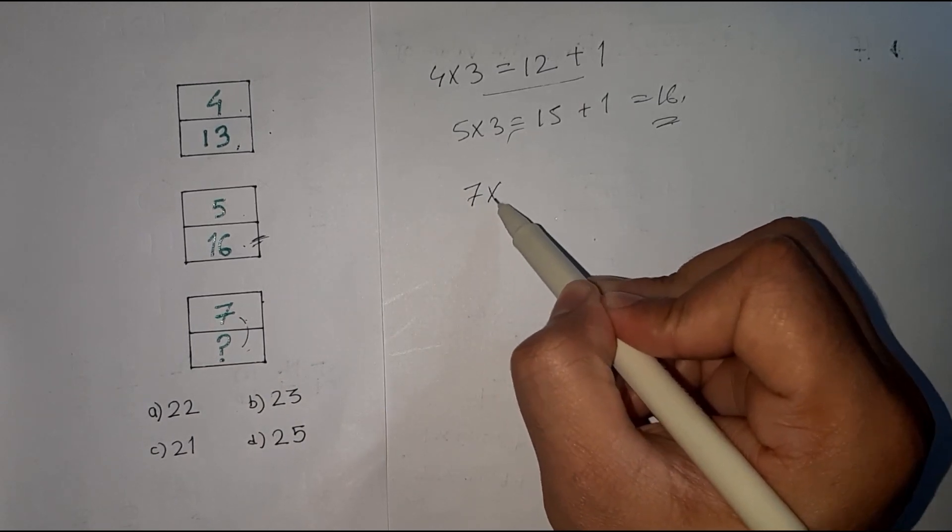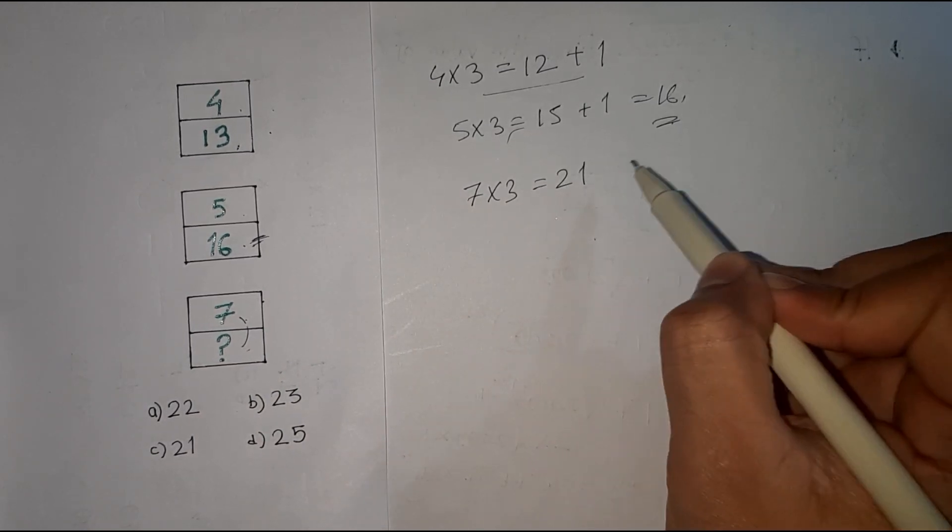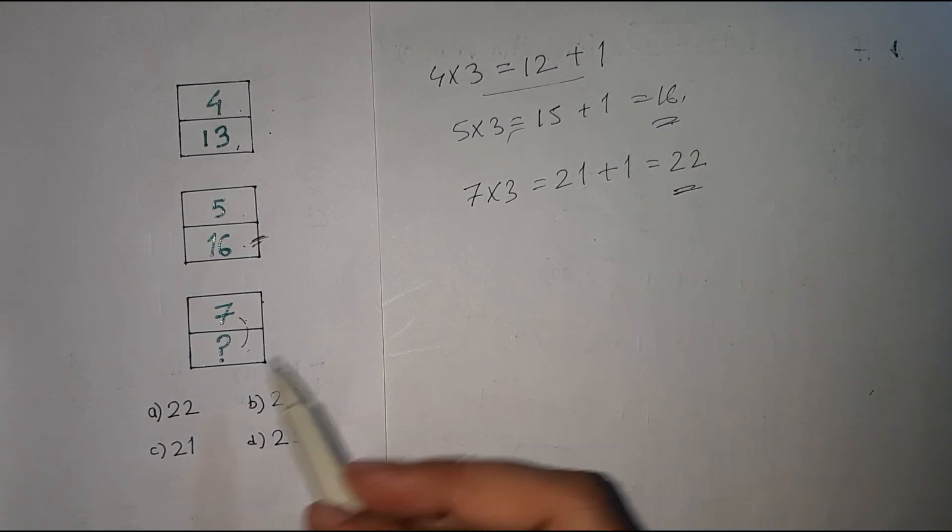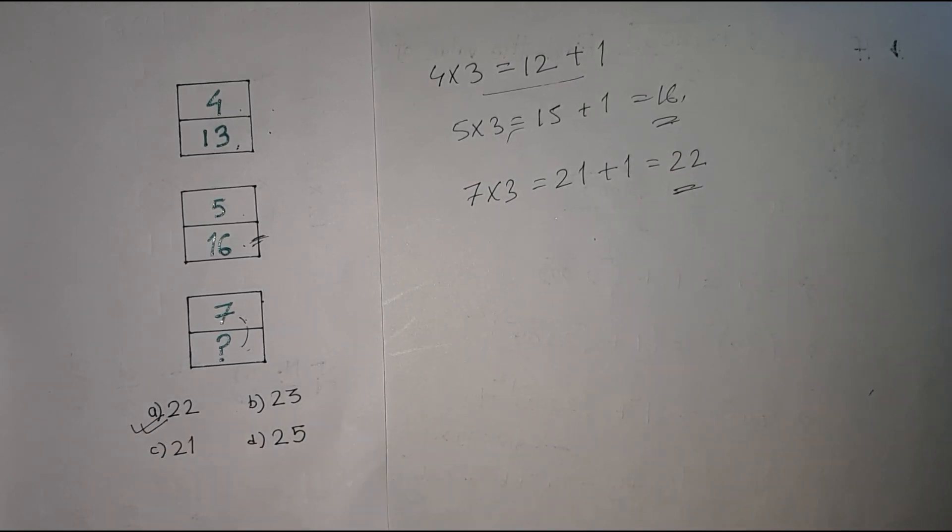7 into 3 is 21, and if we add 1 to 21 we'll get 22. So the option should be option a, 22. Thanks for watching guys, do like and subscribe.